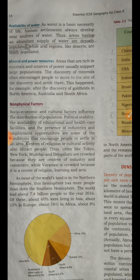Non-physical factors include socio-economic and cultural factors. A politically stable country will have good population because education and healthcare facilities are available and industries give employment opportunities. Centers of religious and cultural activity also attract large numbers of people — Tokyo, New York, Mumbai, and Bangalore are crowded because they are centers of industry and commerce, while Varanasi is crowded because it is the center of religious learning and arts.